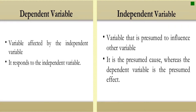So what is dependent variable? Dependent variable is defined as the variable affected by the independent variable. What about independent variable? This is the variable that is presumed to influence the other variable. This variable is the presumed cause while the dependent variable is the presumed effect.